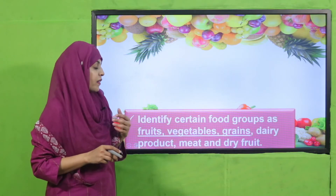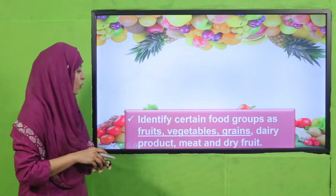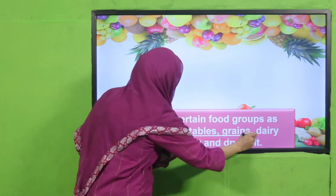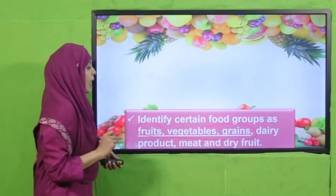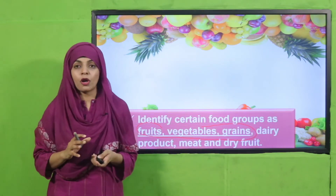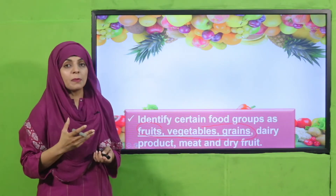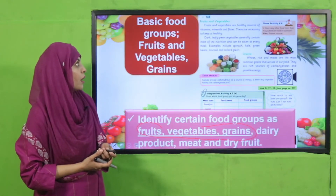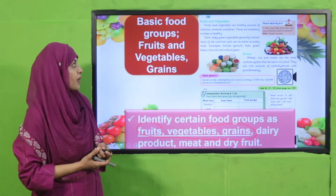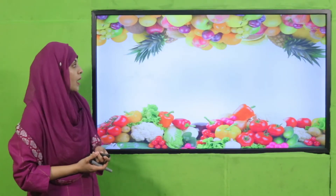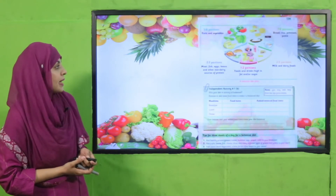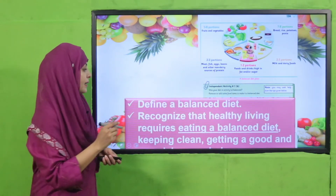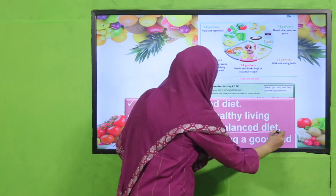In the next lecture, students discussed the remaining food groups: fruits, vegetables, and grains. These are also very important for our body to keep us healthy. So the basic food groups include fruits, vegetables, and grains.